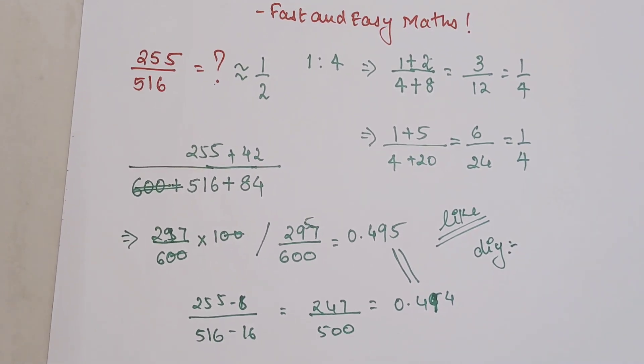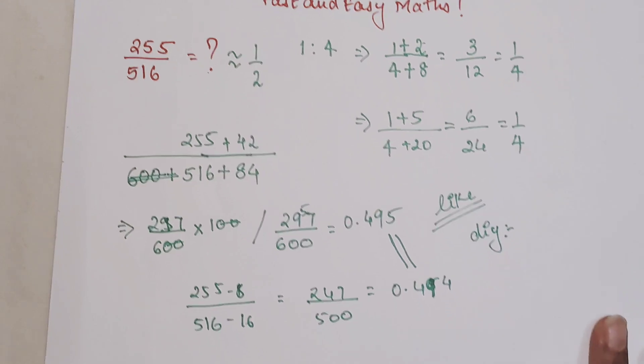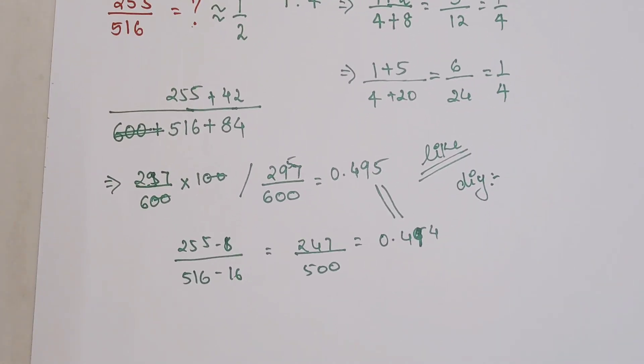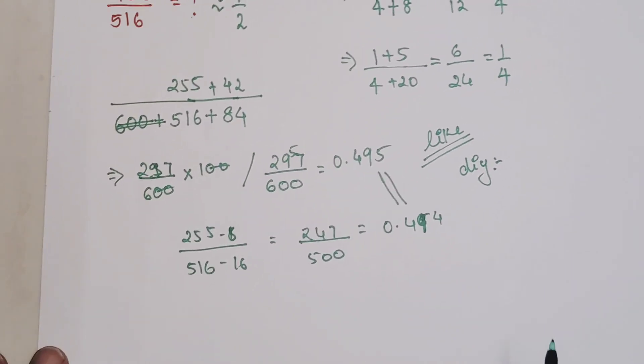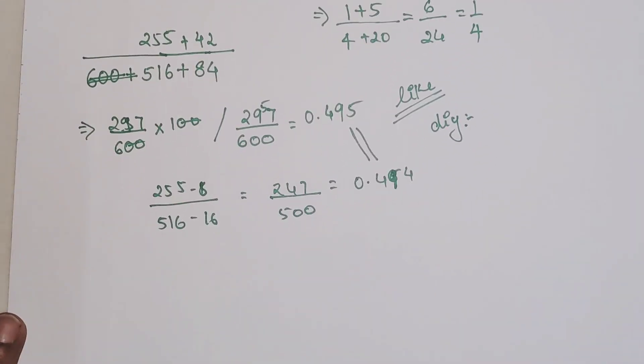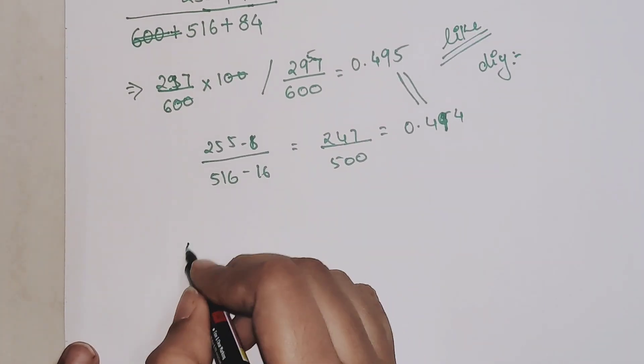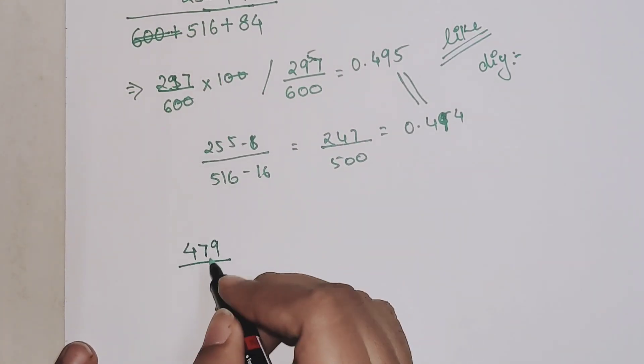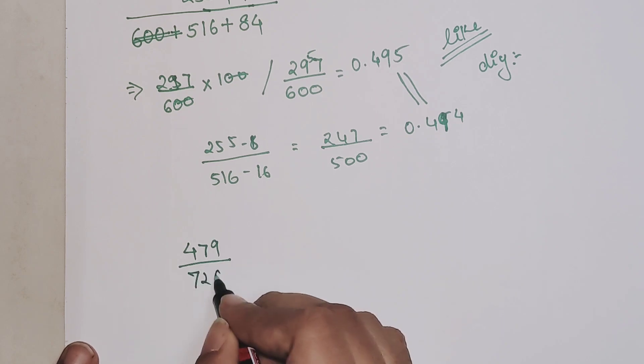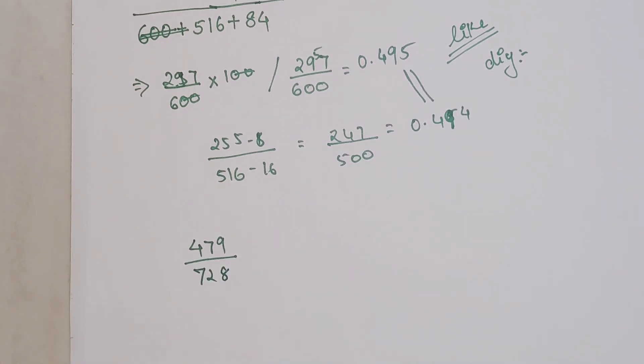Now very quickly, let's see what happens when you have to do something with a bigger or difficult ratio: 479/728. This is very difficult to figure out also.